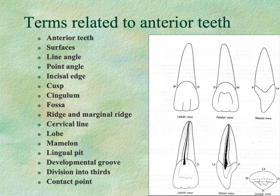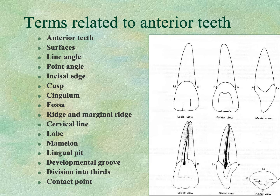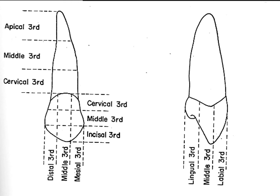We will revisit terms used to describe anterior teeth: surfaces, line angles, point angles, incisal edge, cusp, cingulum, fossa, marginal ridges, cervical line, lobe, mamelons, lingual pit, developmental groove, divisions into thirds, and contact points. All these terms will be used to describe the incisors in this lecture. Remember dividing teeth into thirds, which was the last concept explained in the previous lecture — we will use those divisions to describe features of anterior teeth.